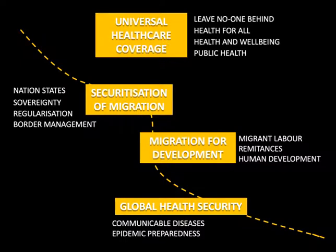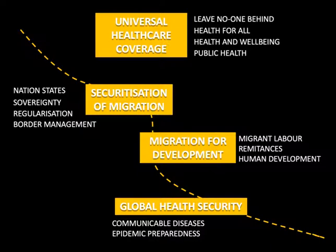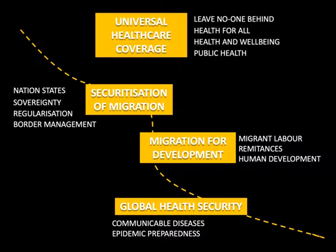I would like to encourage you to engage with the Migration, Health and Development Research Initiative — MADHRI — which is an international network of individuals involved in research. Beyond the academy, it includes individuals from civil society, UN agencies, and governments, with a particular emphasis on earlier career people. There are a range of resources on the website, and this initiative is an example of the need for alliance building — of finding ways to support individuals who are struggling to work in these contested political spaces to bring these issues together.